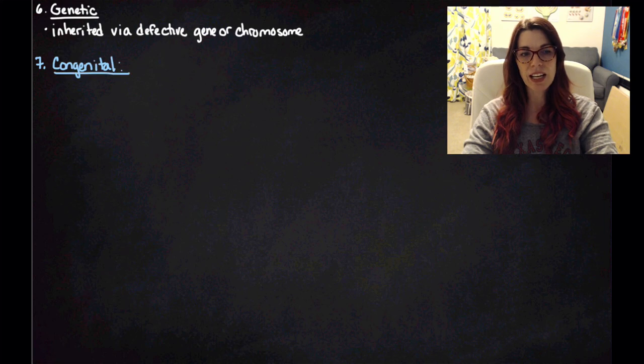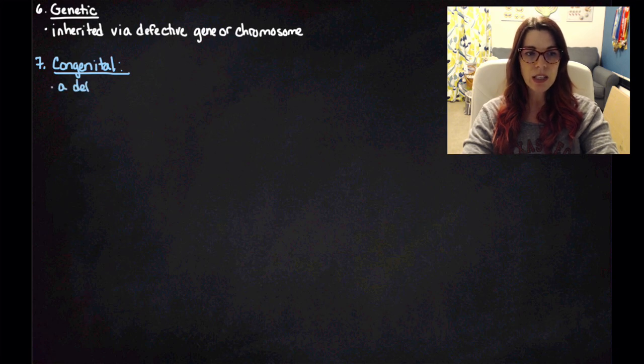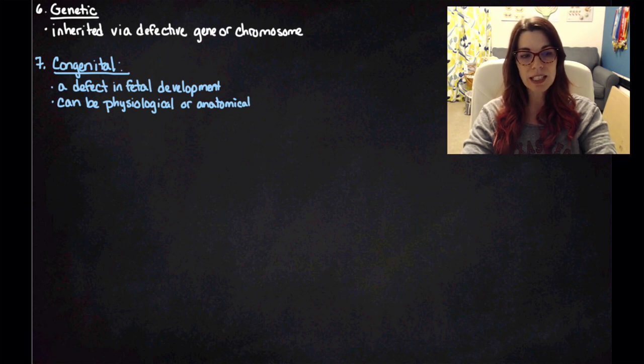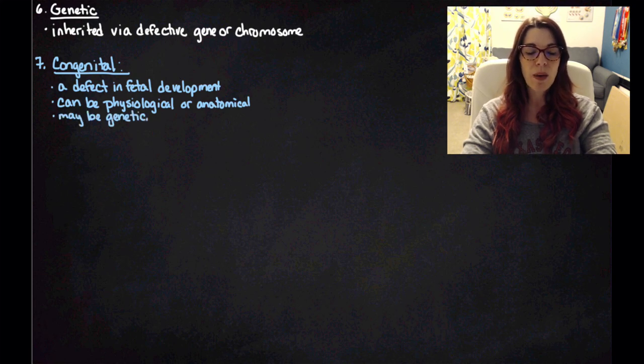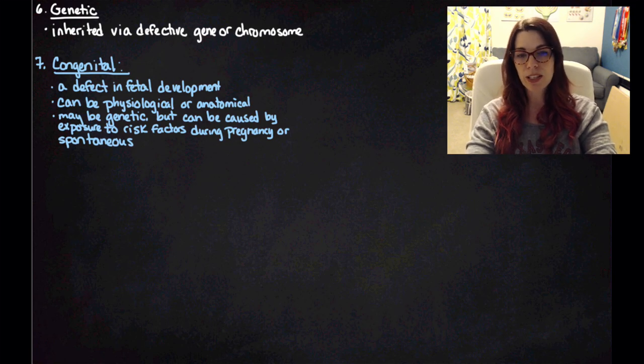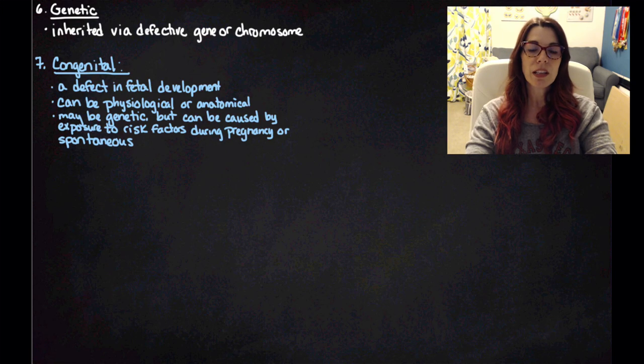Number seven is a congenital disease. Congenital diseases are a little more difficult to think about. So a congenital disease is a defect in fetal development. So they can be a physiological or an anatomical disease. They can be related to genetic disorders. But they can also be related to causes from environmental exposure, risk factors during pregnancy. So it could be due to exposure of the mother to some type of chemical during pregnancy, it can be the consumption of alcohol during pregnancy, but they can also be spontaneous.